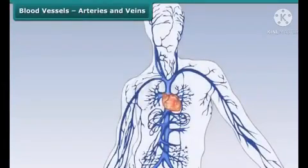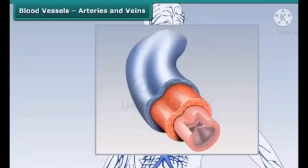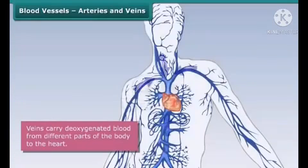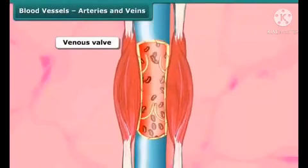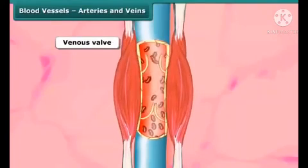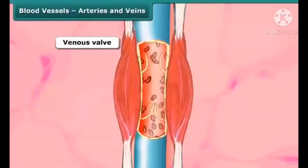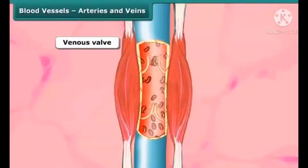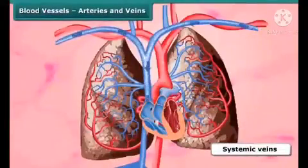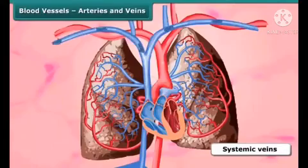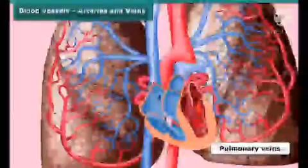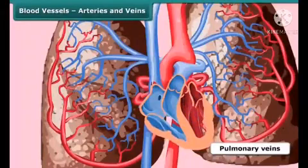Veins are blood vessels with thin walls. They are close to the skin and carry deoxygenated blood from the different parts of the body to the heart. Most veins have flaps known as venous valves that ensure blood flows only towards the heart, preventing backflow. The pressure of blood in veins is lower than in arteries. Veins are of two types: systemic veins, and pulmonary veins, which carry oxygenated blood from the lungs to the heart.